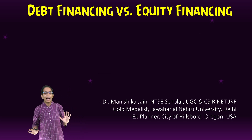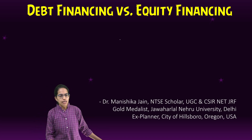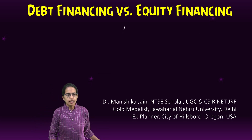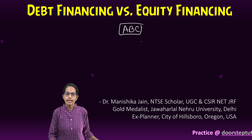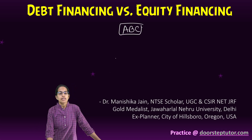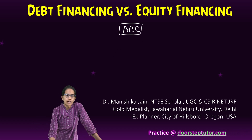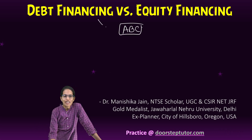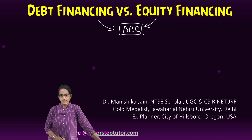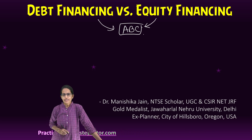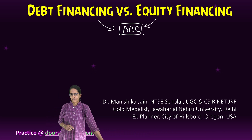Let's say I am a company ABC. This company ABC wants to finance itself. There are two ways out: one is called debt financing and the other is called equity financing. Let's understand the difference.